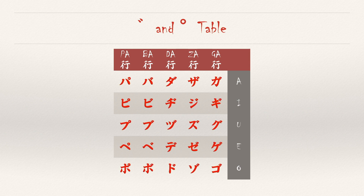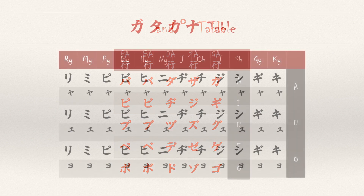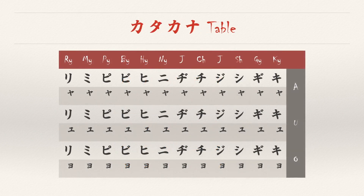We are not done yet! We have also learned to read and write the palatal symbols, or the kōgayon in Japanese. That's a mere 36 more syllables. In total, we have 109 syllables.